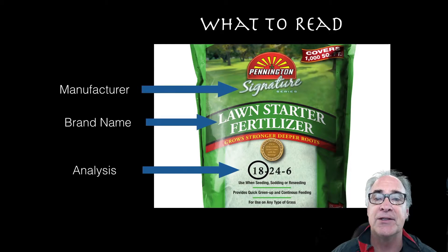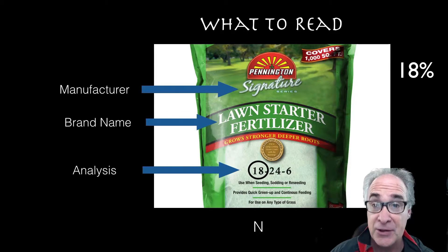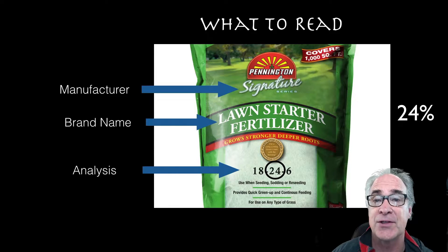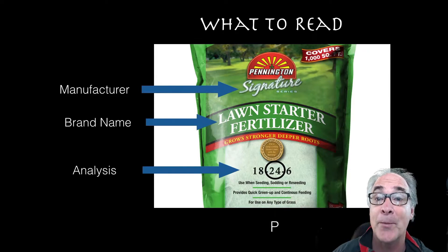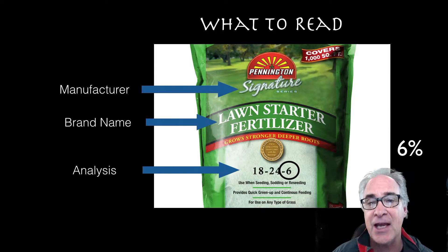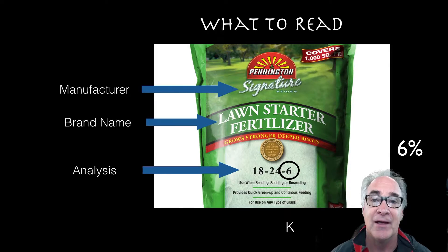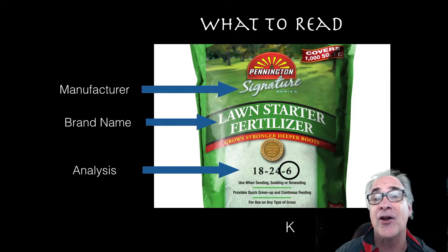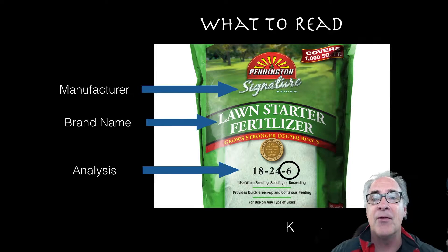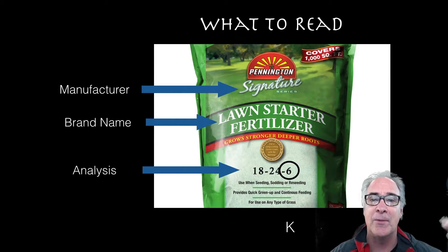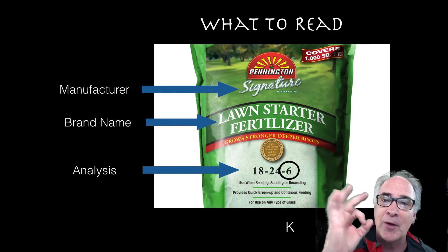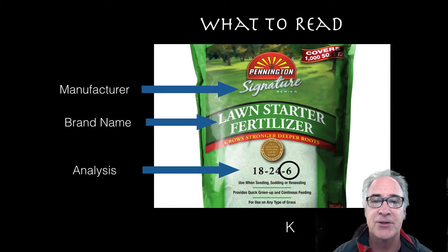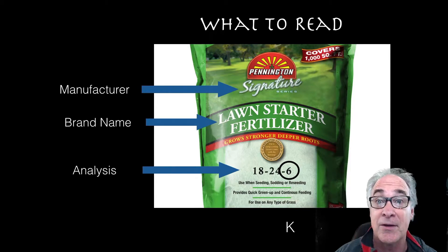The first number we're going to look at is 18% — that's 18% nitrogen. The second number is going to be phosphorus, at 24%. And then the last one is going to be potassium, which in this case is 6%, designated by the letter K. Now if you add all of those up, it doesn't equal 100%. So what else is in it? Things like inert material, filler, and maybe other things that allow it to be pelletized, so it can go in a particular piece of equipment or be broadcast. That's what the rest of the bag is.